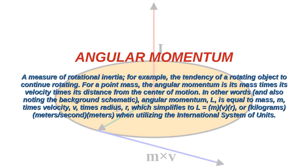In other words, and also noting the background schematic, angular momentum L is equal to mass M times velocity V times radius R, which simplifies to L equals M times V times R, or kilograms times meters per second times meters, when utilizing the international system of units.